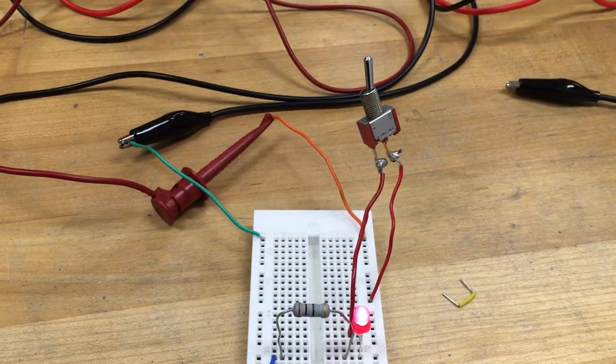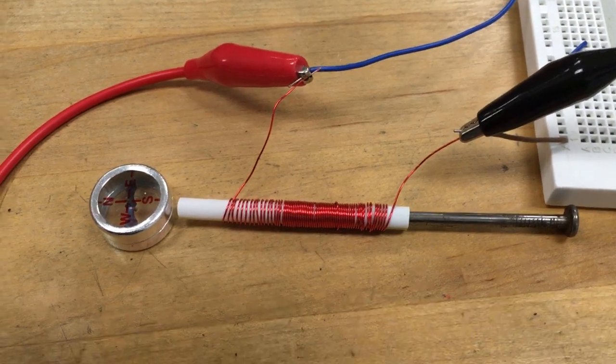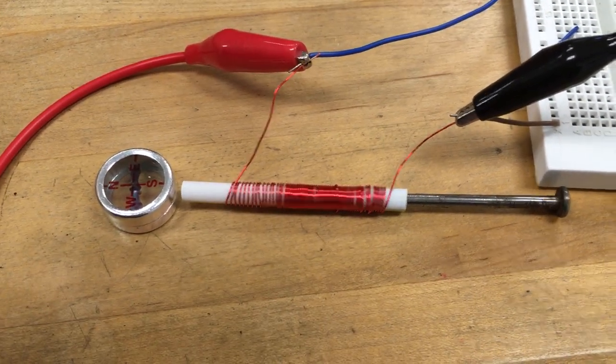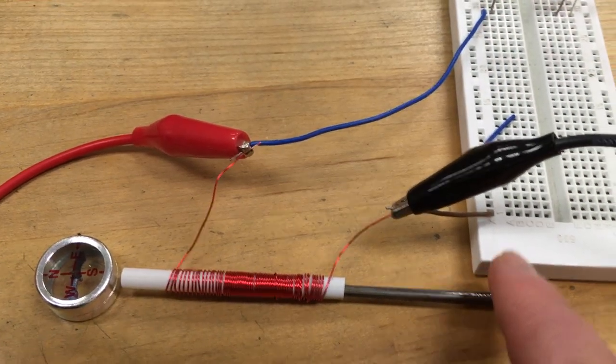The switch is closed, goes through a 10 ohm resistor, and in this case comes through a coil of wire with a nail that I've sort of partially inserted here, as you can see.